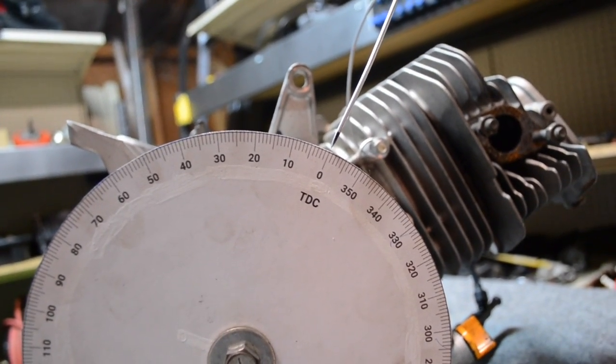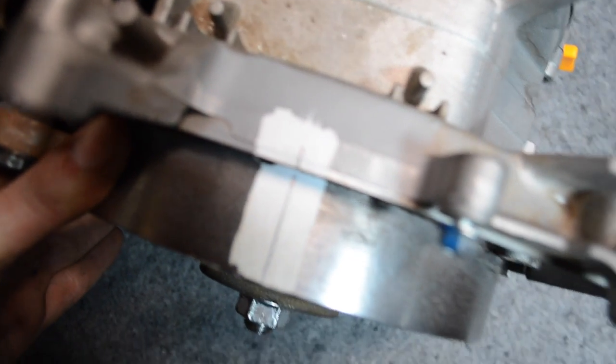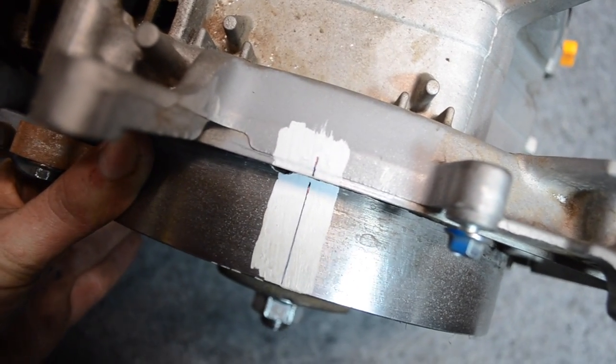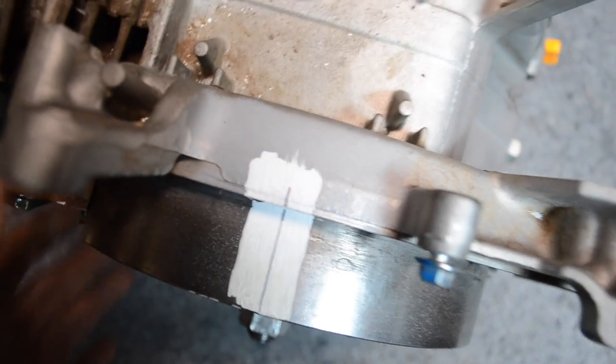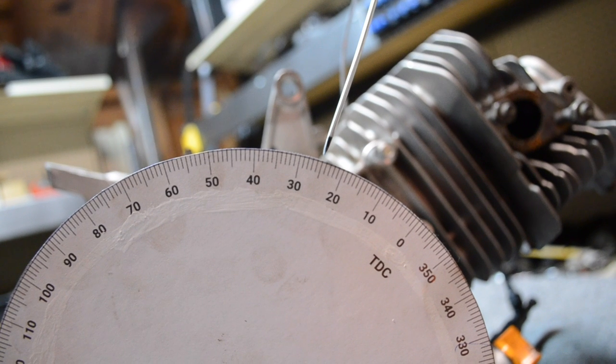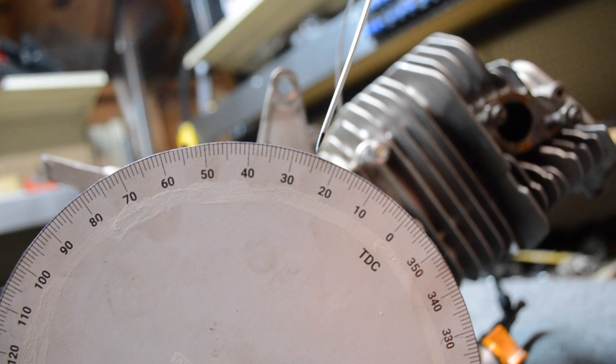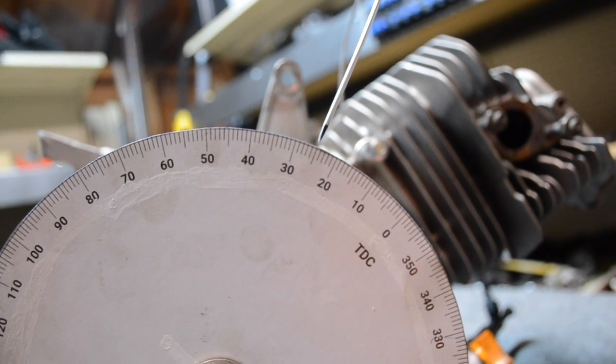We are going to line up the timing marks that we made before with the timing light, and with those lined up, go back over to the degree wheel and that will tell us the ignition timing of this engine. Looks like we are right at 25 degrees before top dead center. And that is how you find timing on a small engine.